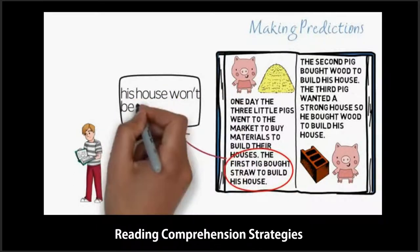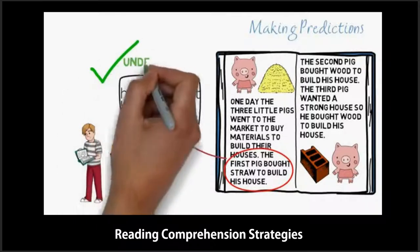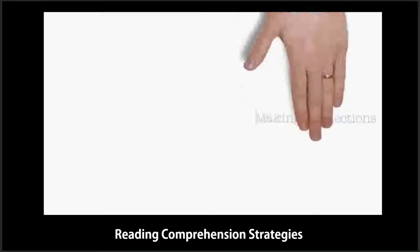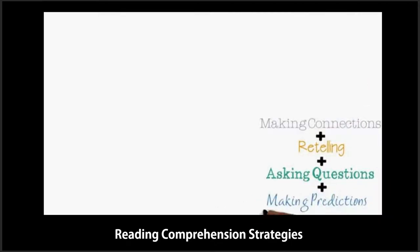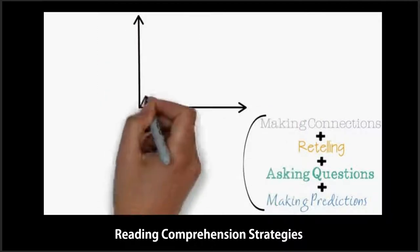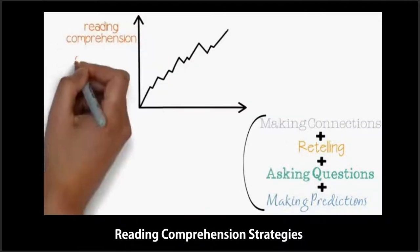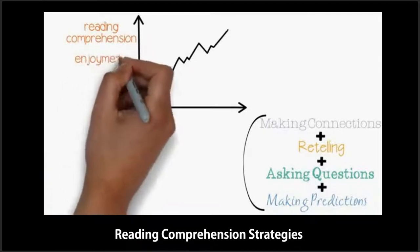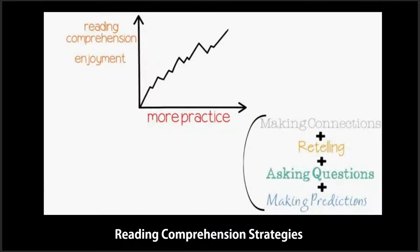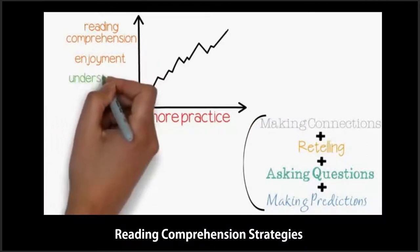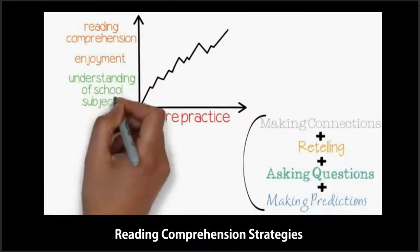Predicting what will happen next evaluates a student's ability to understand clues from the text to draw conclusions. When most of a student's predictions are correct, or at least reasonable, you know that the reader understands the text. Reading comprehension can be very tricky for struggling readers. However, being deliberate about using these reading strategies can increase both reading comprehension and overall enjoyment of reading. The more a student practices, the more she will be able to use these strategies automatically, almost without thinking about them. This will, in turn, lead to a better understanding of all school subjects and areas of study. Happy reading!